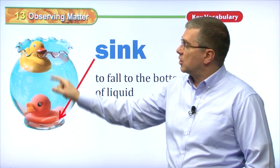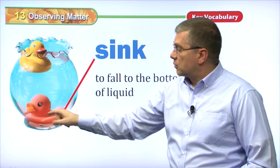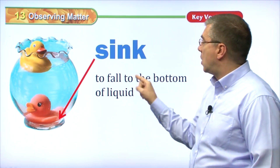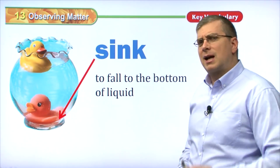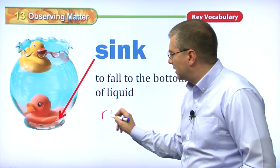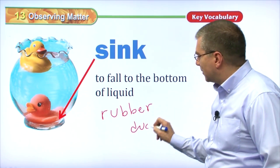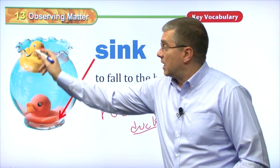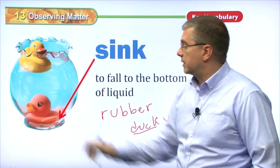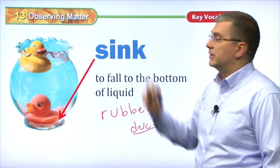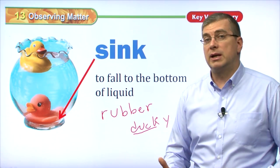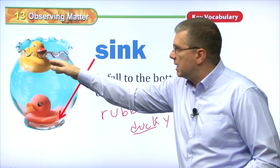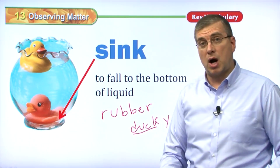Now, the opposite. We saw that one rubber ducky is floating, but this rubber ducky is on the bottom — it sank. To sink means to fall to the bottom of a liquid. This rubber ducky fell down. By the way — rubber ducky: it's a duck made of rubber. Usually rubber floats, but if you put metal inside it, it will sink to the bottom of the water. So we have two opposites: to float and to sink. These are properties of matter. We use our senses to find out these properties — we can see that one duck floats and the other duck sinks.